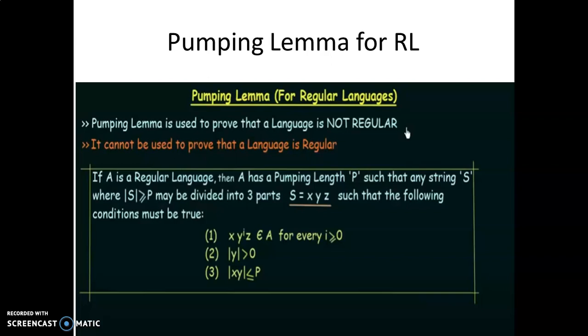We have seen these concepts in the chapter of Finite State Automata Machine. Which languages are called a regular language? The languages for which we can draw a finite state machine and also we can write a regular expression. And what is meant by a non-regular language? The languages for which we are unable to draw a finite state machine or we are unable to write a regular expression.